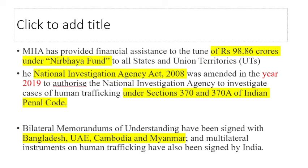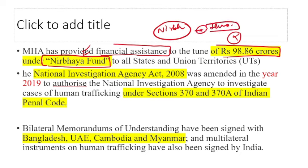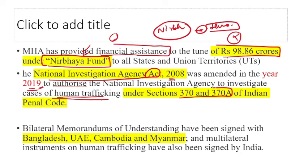MHA has provided financial assistance of ₹98.86 crores under the Nirbhaya Fund. In exam, Nirbhaya Fund may be linked to human trafficking. The National Investigation Agency (NIA) Act 2008 was amended in 2019, authorizing NIA to investigate cases of human trafficking, covered under Sections 370 and 370A, with details in Sections 371 and 378.